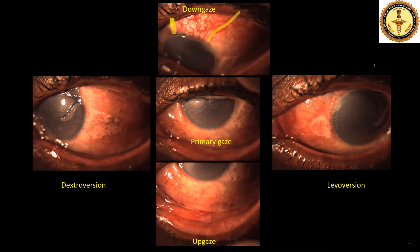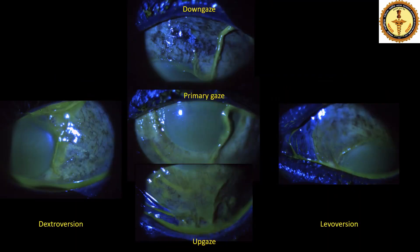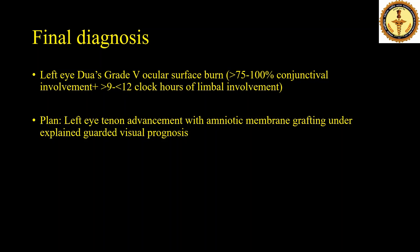These are the clinical images of the left eye showing total corneal epithelial defect with diffuse corneal stromal edema, and 270 degrees of limbal blanching involving the nasal, inferior, and temporal limbus. However, the supero-temporal limbus from 11:30 to 2:30 o'clock had preserved limbal vascularization. Following painting the ocular surface with fluorescent dye and examination under cobalt blue filter, we can see total corneal epithelial defect, conjunctival epithelial defects involving the entire bulbar conjunctiva except the caruncle and the supero-temporal region, and fragmented sheets of epithelium hanging over the cornea. A final diagnosis of Dua's Grade 5 ocular surface burn of the left eye was made, and a plan of left eye tenon advancement with amniotic membrane grafting was made under explained guarded visual prognosis.